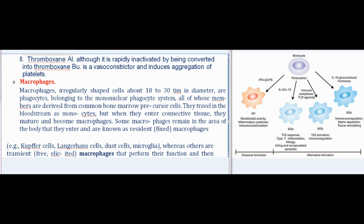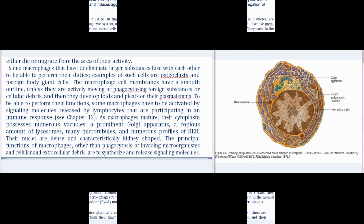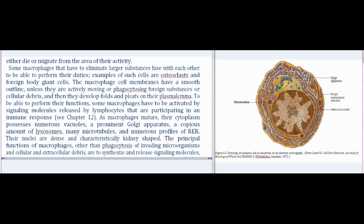Macrophages, irregularly shaped cells about 10 to 30 μm in diameter, are phagocytes belonging to the mononuclear phagocyte system, all of whose members are derived from common bone marrow precursor cells. They travel in the bloodstream as monocytes but when they enter connective tissue they mature and become macrophages. Some remain as resident fixed macrophages (e.g., Kupffer cells, Langerhans cells, dust cells, microglia), while others are transient free macrophages. Some macrophages fuse with each other to eliminate larger substances, forming osteoclasts or foreign body giant cells.